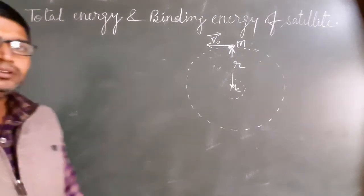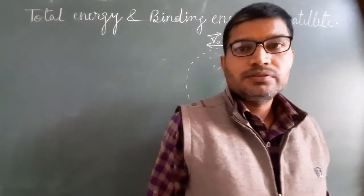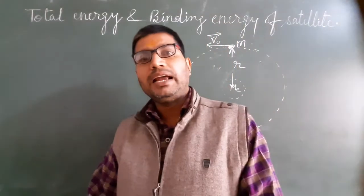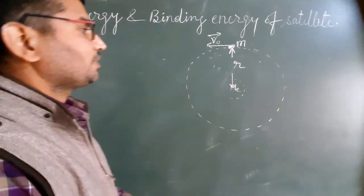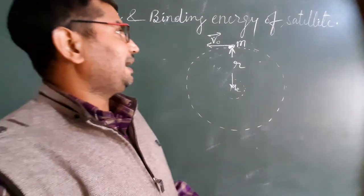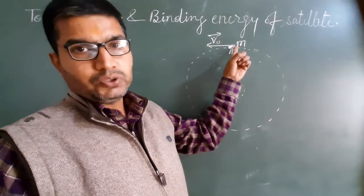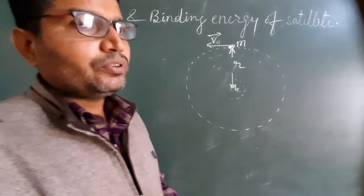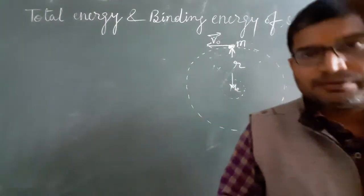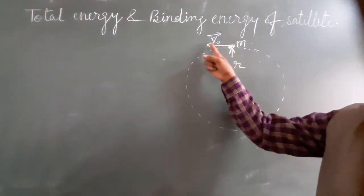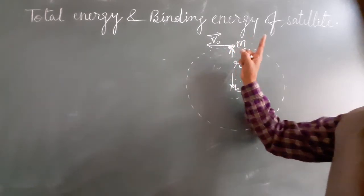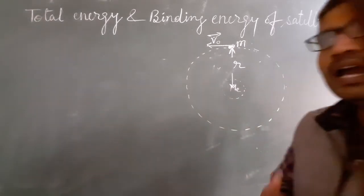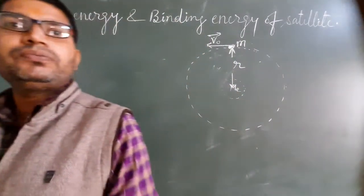Hello students, we are going to discuss total energy and binding energy of satellite. All of us are aware with this fact that during the motion of revolution of a satellite, there are two types of energies: first one is the kinetic energy due to its motion, and second one is the gravitational potential energy because the satellite is revolving within the gravitational field of earth.